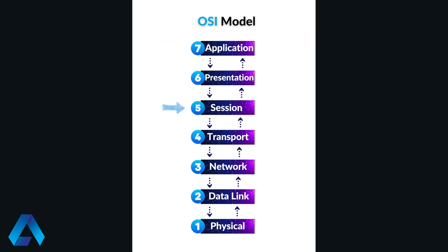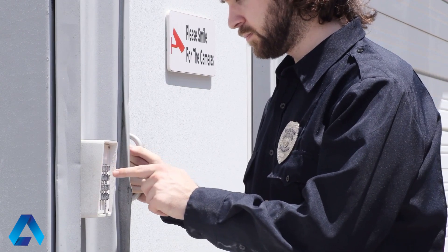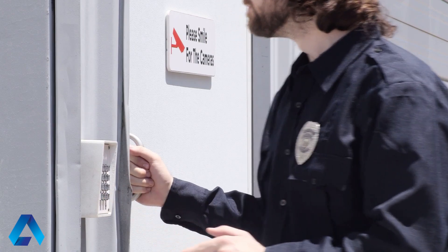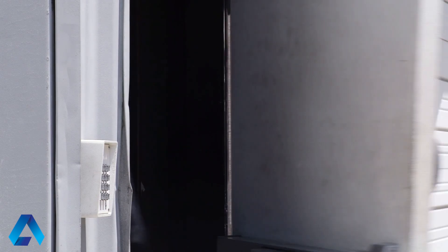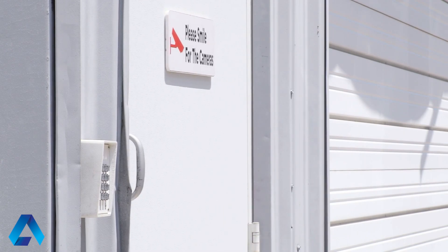Layer 5, session. This layer manages the communication between different applications, using techniques such as session establishment, maintenance, and termination. Recall the last time you had to enter a code on a keypad in order to enter a secure building? That security feature makes sure that only authorized personnel can enter the building, and it demonstrates how sessions are established and secured between applications, using protocols such as SSL and TLS to secure communication over the internet.